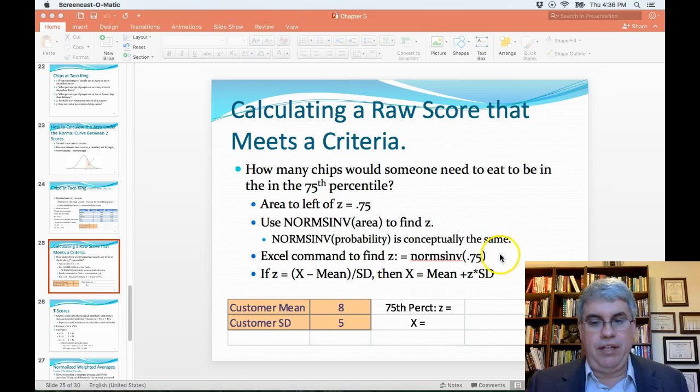So we're going to use the Excel command to find z equals NORM.S.INV, the normalized standardized inverse of .75 to get the percentile rank. And then, if we know that z equals x minus the mean by the standard deviation,